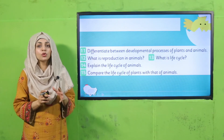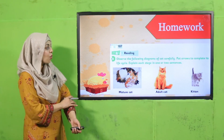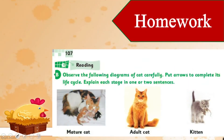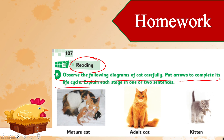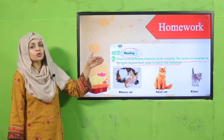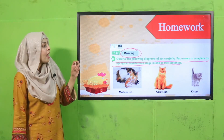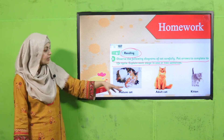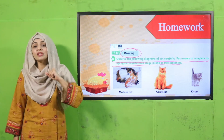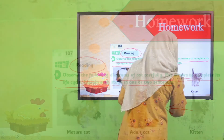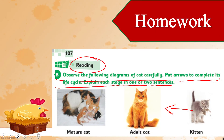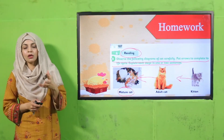I hope everybody is now able to differentiate between the two. Now for homework, you will move to page number 107 of unit number 11 and do the picture reading. Observe the following diagrams of a cat carefully. Put arrows to complete its life cycle and explain each stage in one or two sentences. Here you have a cat life cycle — draw arrows to complete it. Write down that this is the kitten, then the adult cat, then the mature cat which is now able to give birth to live babies. You can do it in your notebook also.